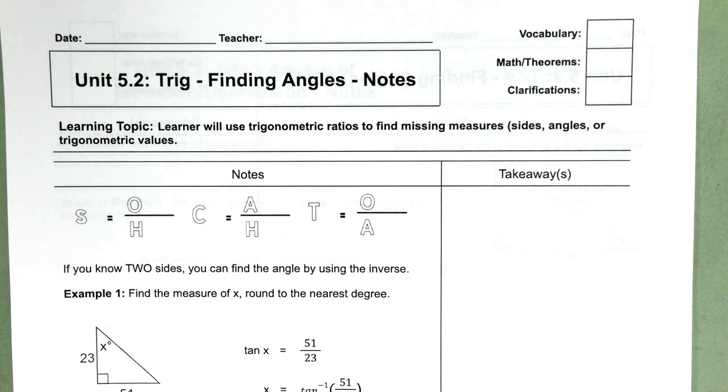5.2, we are going to use trig to find the measure of missing angles.